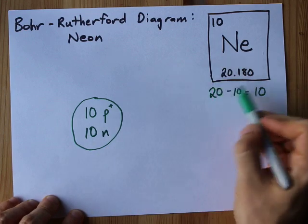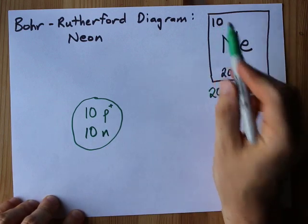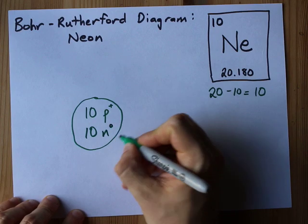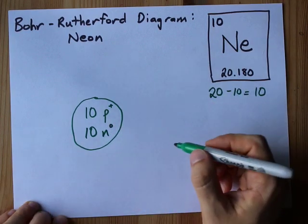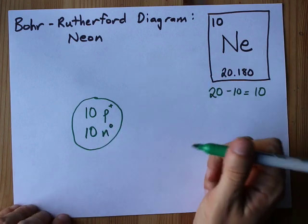You always have to take the average mass given here and subtract the atomic number. My symbol for neutron is n with a little zero there to show that there's no charge. Do what your teacher tells you to.